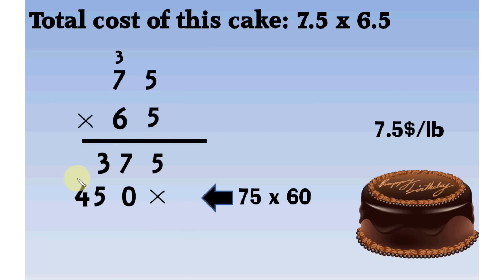Now, we add the products. We multiplied 75 by 5, then we multiplied 75 by 60. If we add them, we will find answer of 75 multiplied by 65. 5. 5. 7 plus 0 equals 7. 3 plus 5 equals 8. 4.